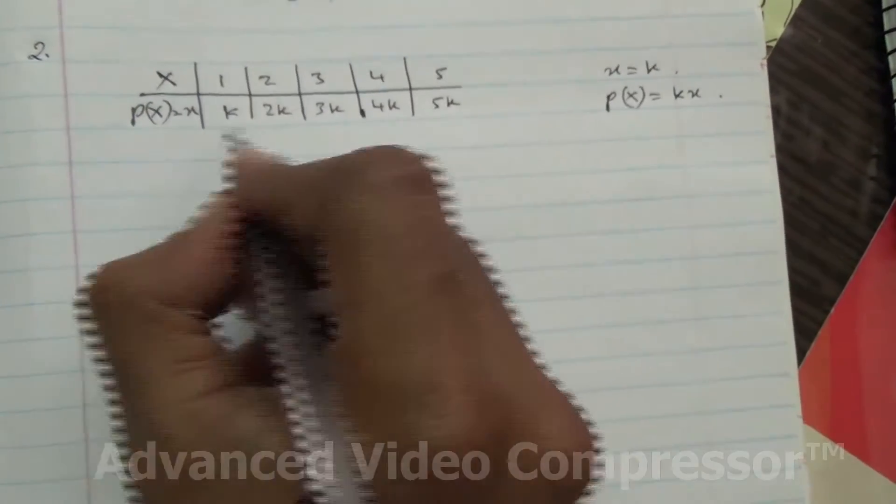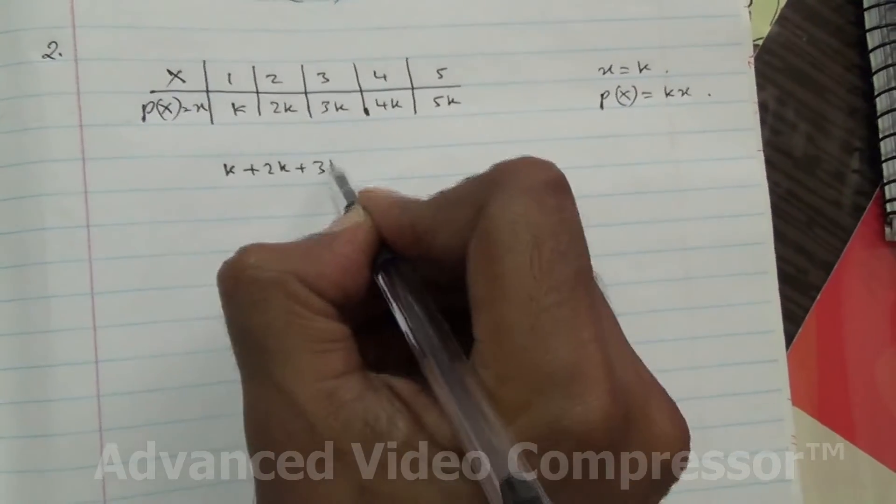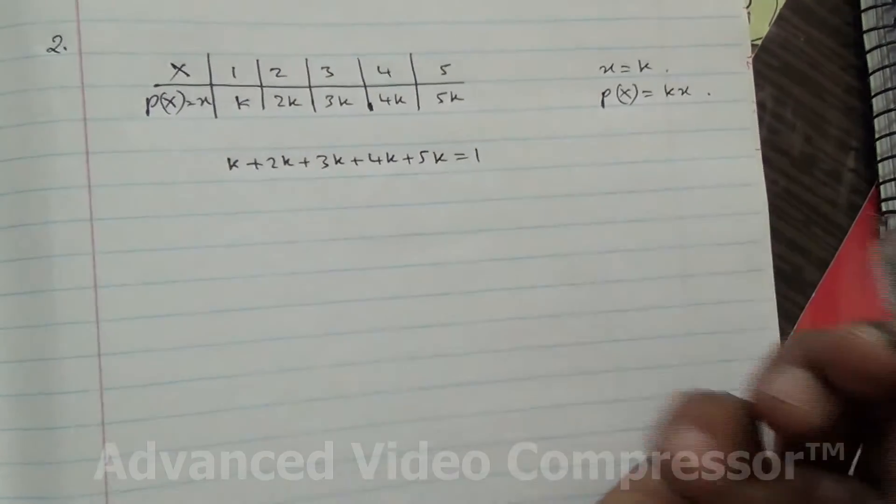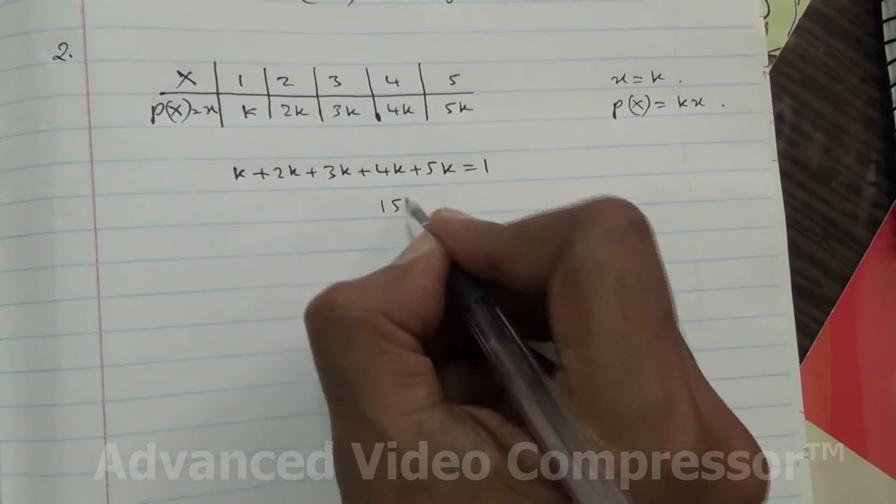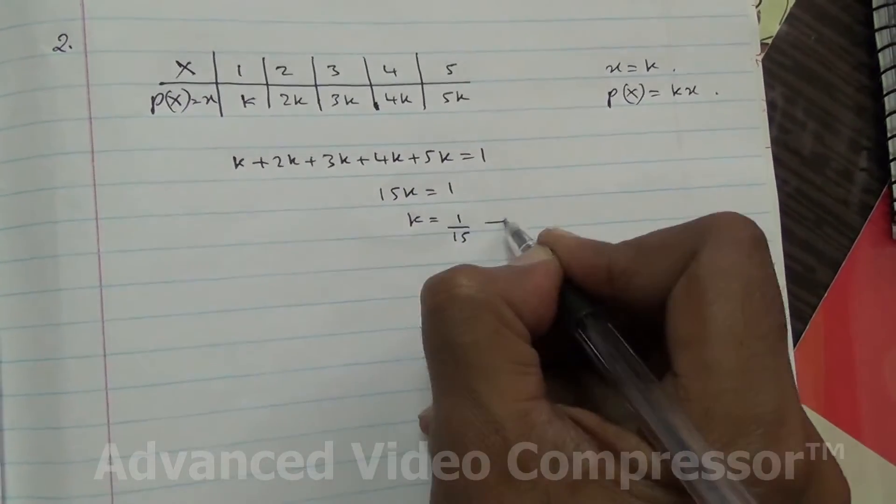Find the value of k, quite easy. So k plus 2k, you just sum all of that and it equals 1 because the total probability should be 1. You get 15k equals 1, therefore k equals 1 over 15.